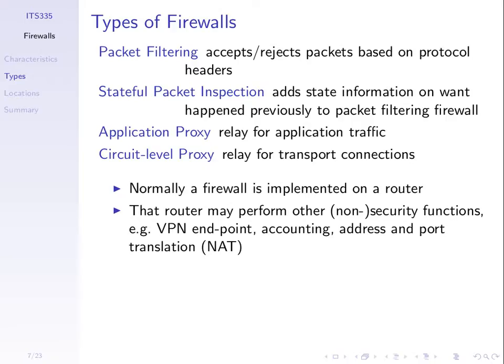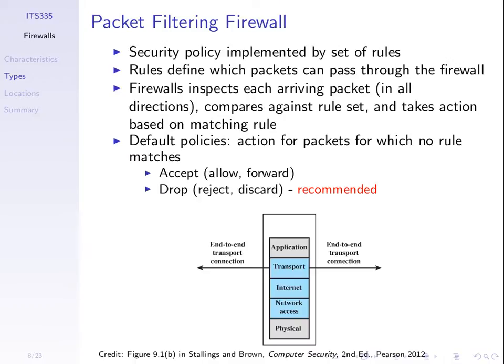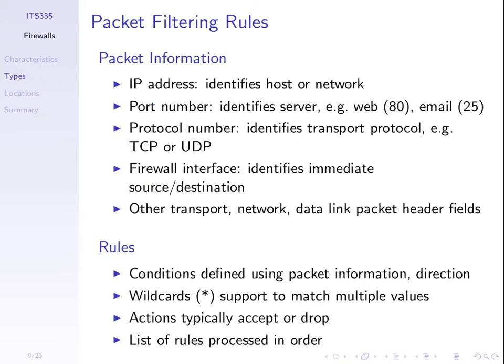We introduce packet filtering firewalls. They look at the packets which pass through the firewall, specifically at the headers. A packet filtering firewall looks at the IP address of the source and destination — who sent it, who they're sending it to — port numbers which identify applications, and the protocol number which identifies the transport protocol being used, such as TCP or UDP, to determine whether to allow the packet or not.